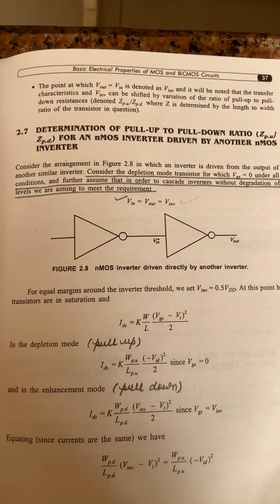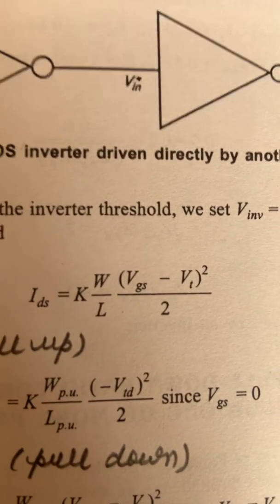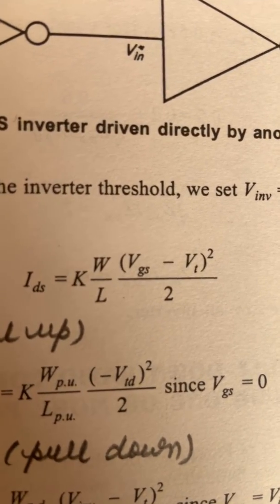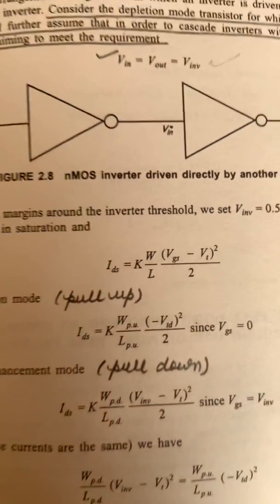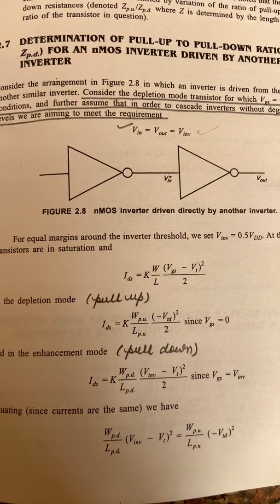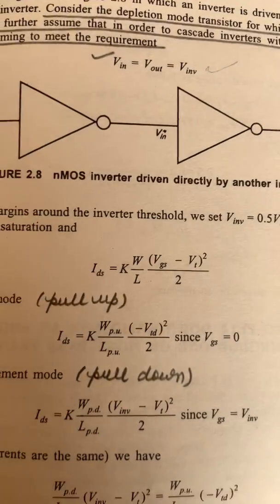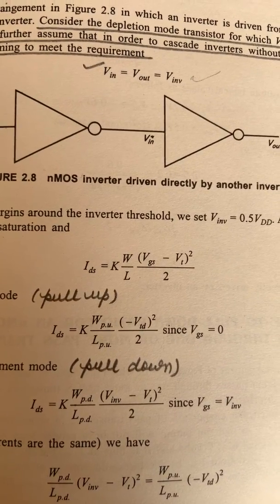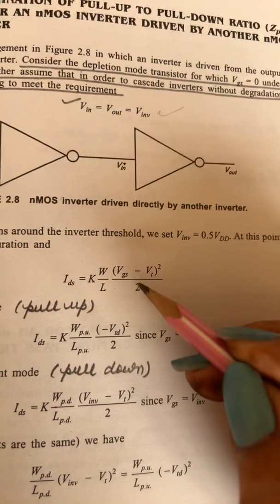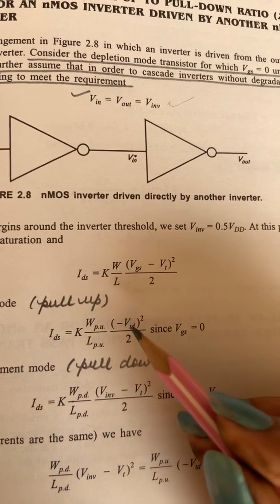At this point, both transistors are in saturation. In the saturation region, the drain-to-source current IDS follows a known equation. We rewrite this equation in two forms: depletion mode and enhancement mode. In depletion mode, the transistor is the pull-up, and VGS equals 0. Substituting VGS = 0, we get IDS equals K × (W/L) × (−VTD)² / 2, where VTD is the threshold voltage in depletion mode and (W/L)PU refers to the pull-up transistor.